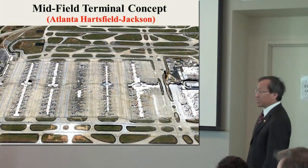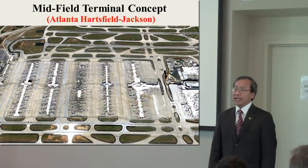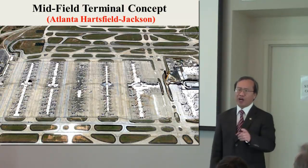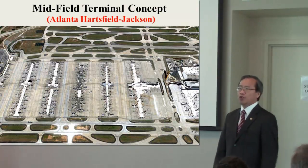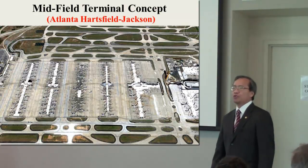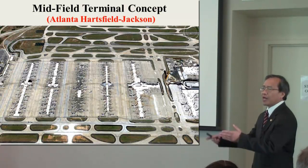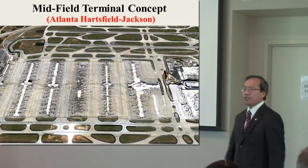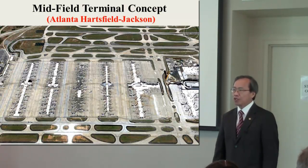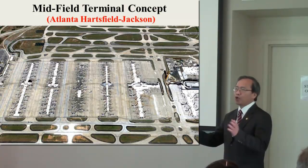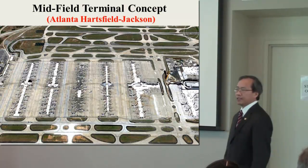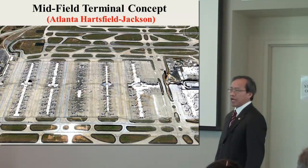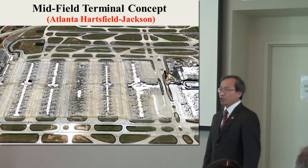The midfield terminal — Atlanta Hartsfield — is by far the world's most efficient airport terminal design concept. Passengers are transported through an underground rail system to midfield terminals so that they can board aircraft directly, thereby minimizing aircraft taxiing, carbon dioxide, and fuel burns.